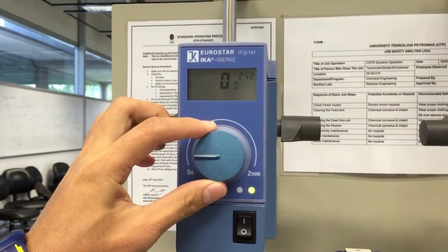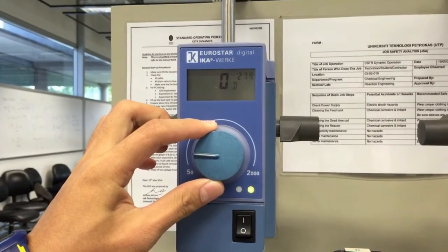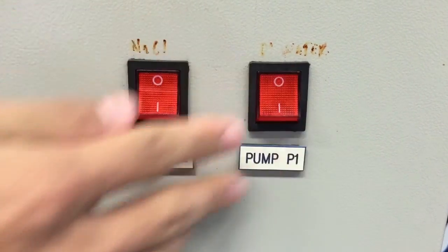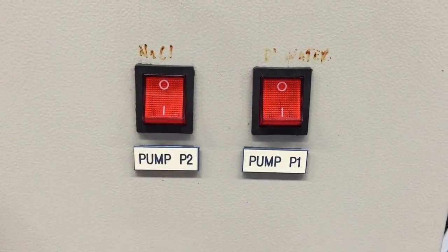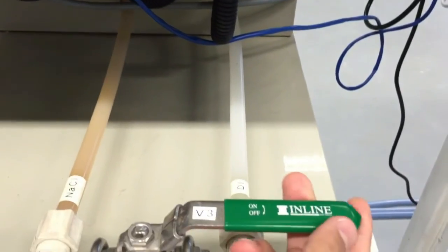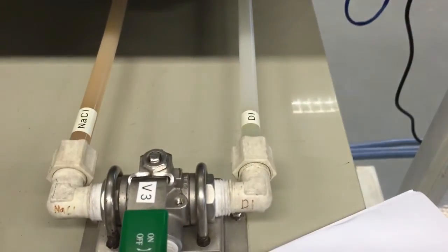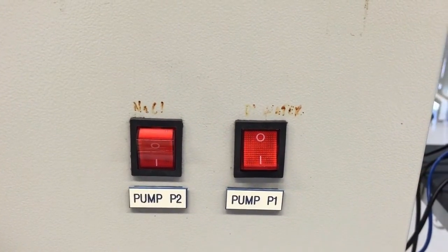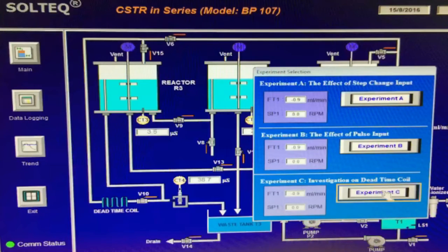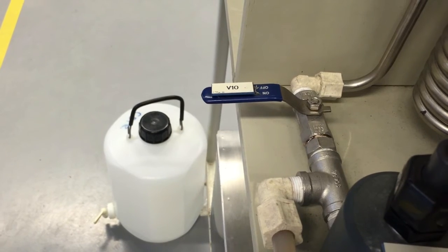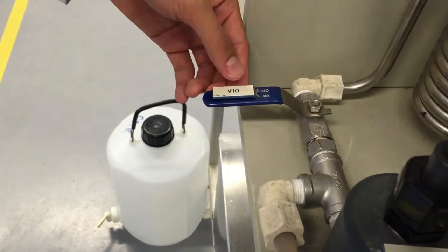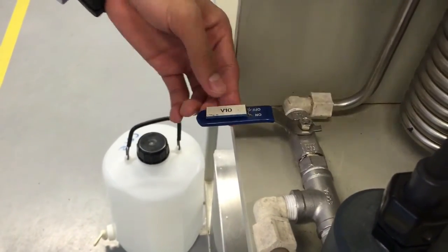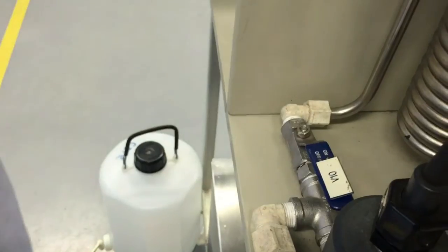Pump P1 is switched off and valve V3 is quickly set towards pump P2. Next, we switch on pump P2 and start the timer simultaneously. We open valve V10 and partially open valve V15 to get the right flow.